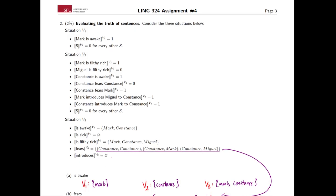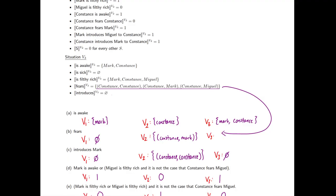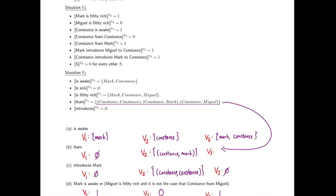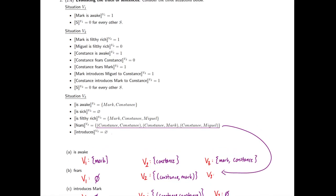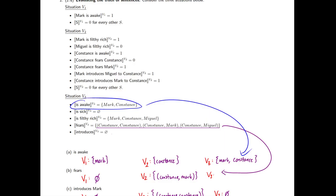The next question was evaluating the truth of sentences in situations. The first three were predicates — so we have to figure out, for A, who is awake in each situation. In V1, 'Mark is awake' is true, which means the only person who is awake is Mark. In V2, we see Constance is awake and nobody else, so Constance is the one awake. In V3, we're just given the set straight up: is-awake = {Mark, Constance}, so we can put this right in.